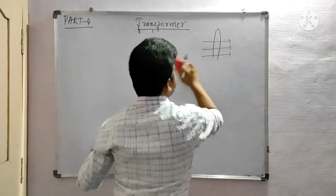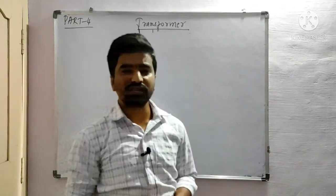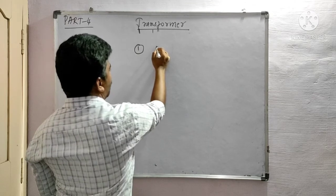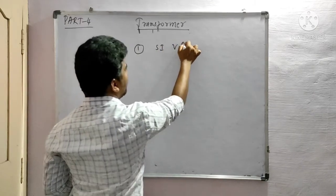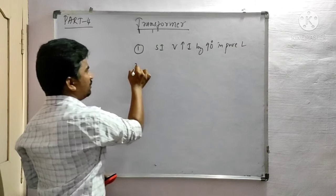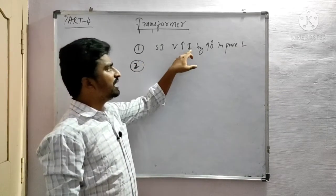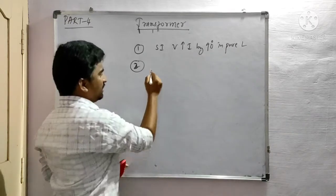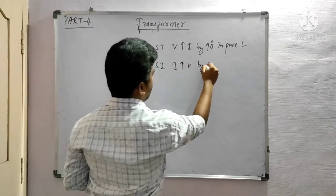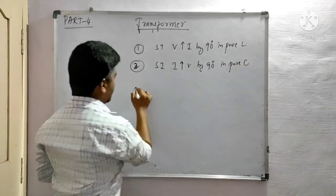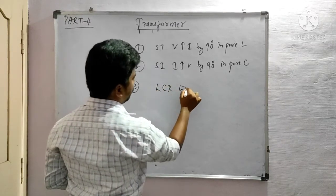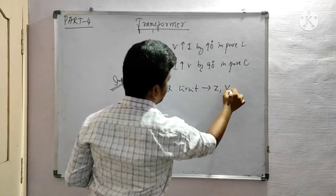Some very important exam questions from this chapter include: show that voltage leads the current by 90 degrees in a pure inductor (3-mark question); show that current leads the voltage by 90 degrees in a pure capacitor; and derivation of impedance, resultant voltage, and phase for a series LCR circuit.